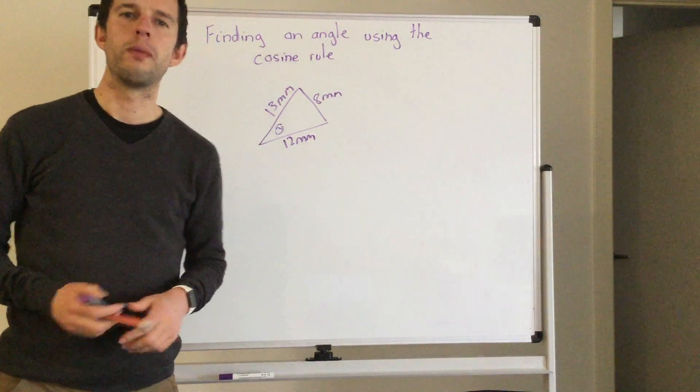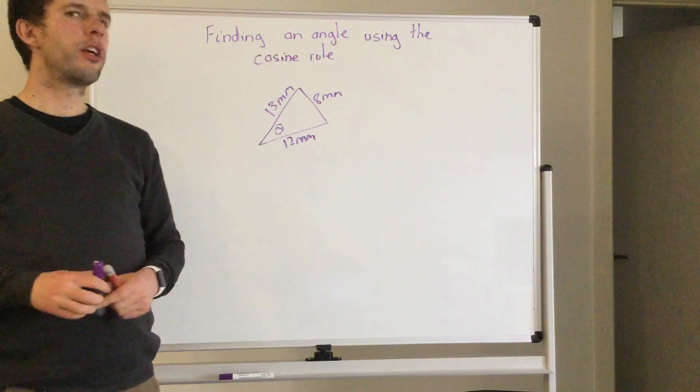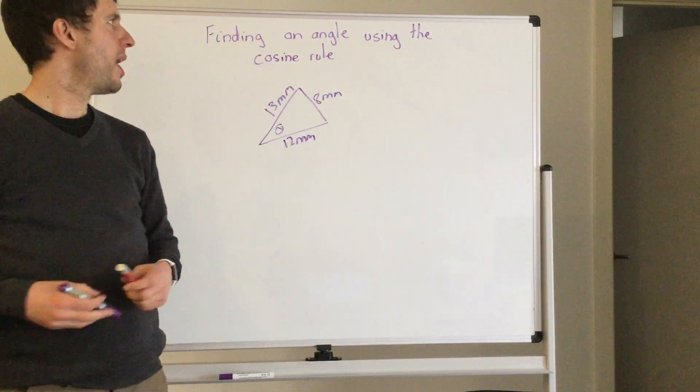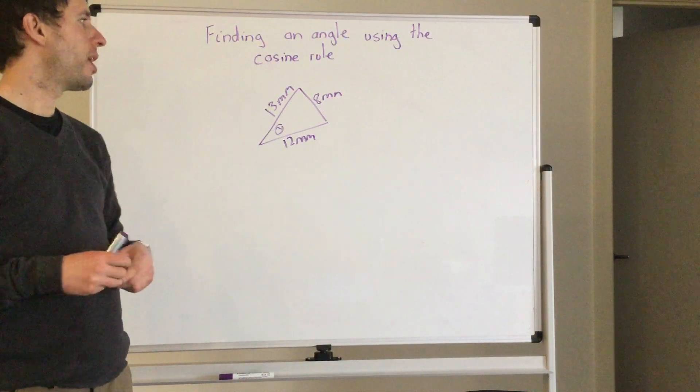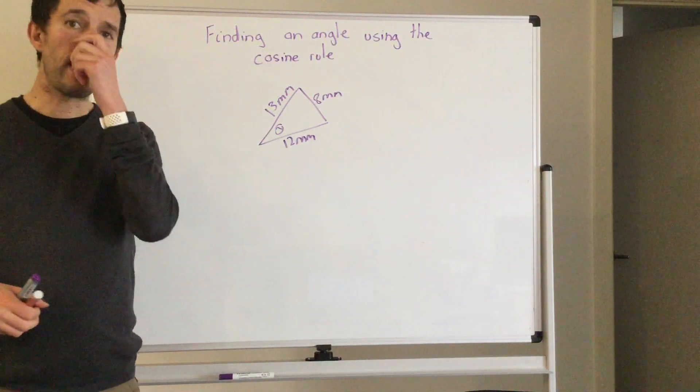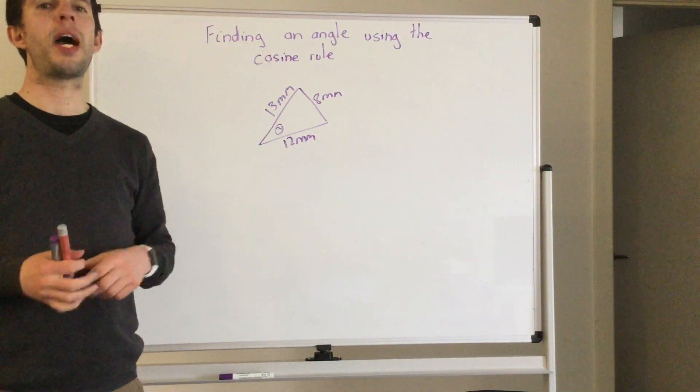Welcome and thank you so much for joining me today. We are going to be using the cosine rule to find an angle because, just remember, with cosine rule there's three sides and one angle, so if there's one missing we are able to find it.